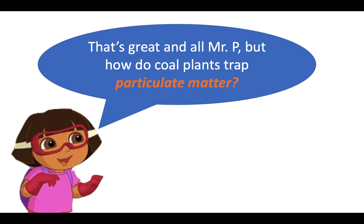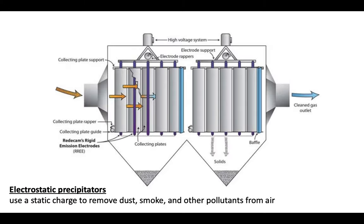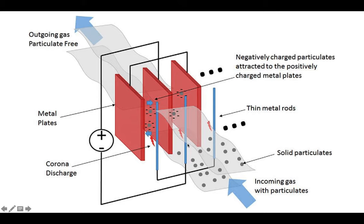How do coal plants trap particulate matter? They can use an electrostatic precipitator, which uses static electricity — a static charge — to remove dust and other pollutants and particulate matter from the air. As the air flows through, an electric charge causes many of the solids and particulate matter to settle out.